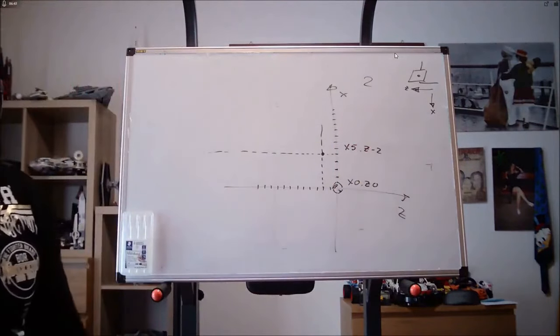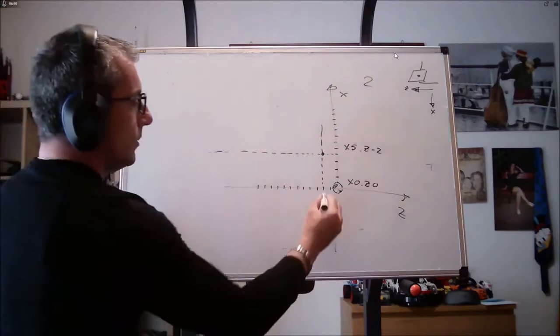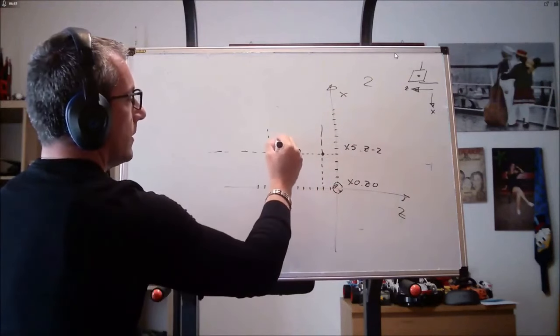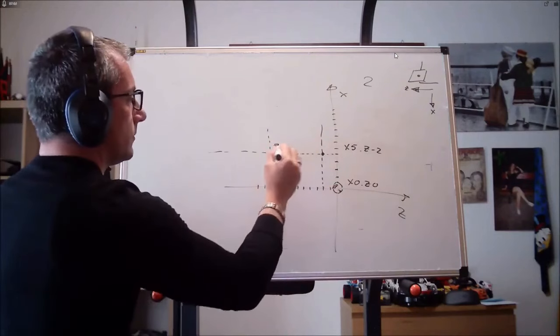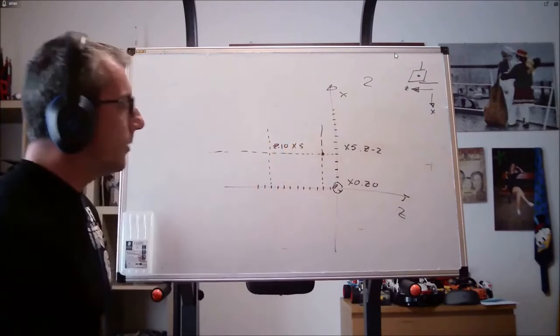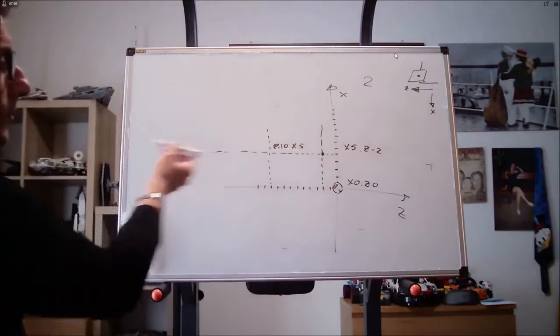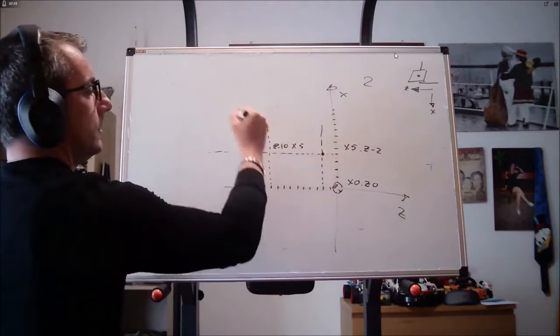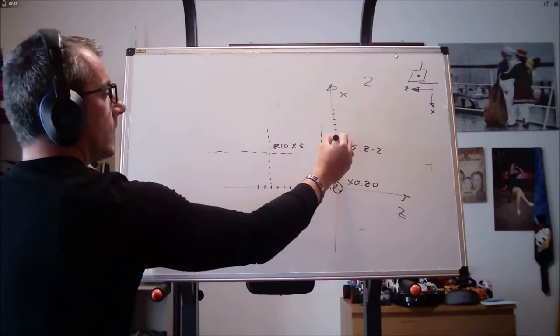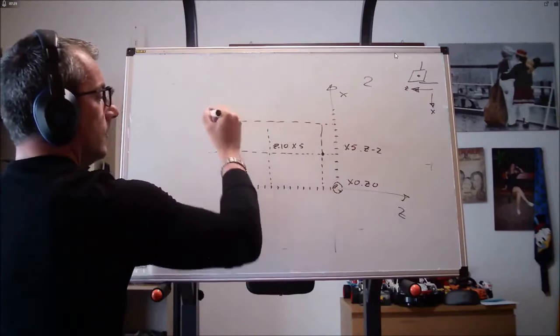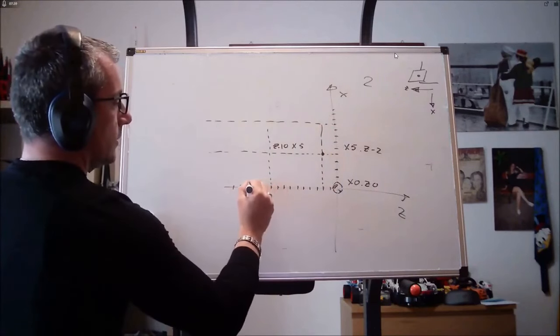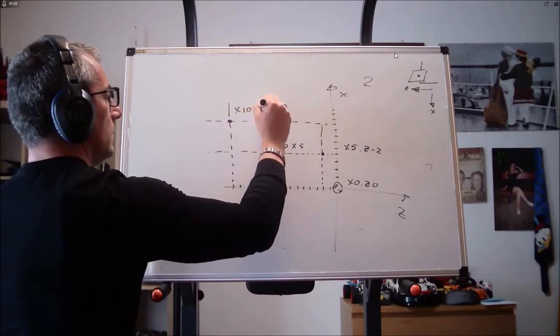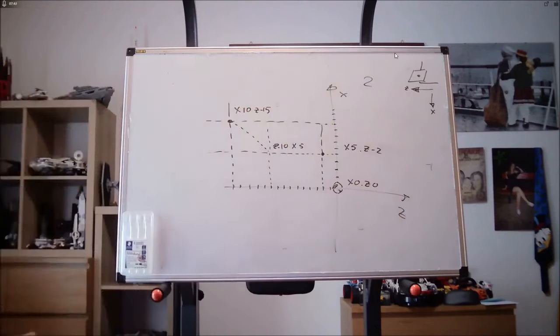From here, if I want to move to Z minus ten, I already anticipate that it will be enough to tell the machine Z minus ten without specifying X. If it was specified in the previous block, the machine will move horizontally to Z minus ten. Now I want to make an inclined trajectory. So to X10, Z minus fifteen, I will specify both coordinates and the machine will make this movement. Okay, this is to learn how to move within our Cartesian axis system.